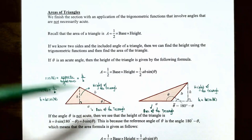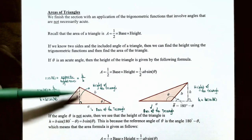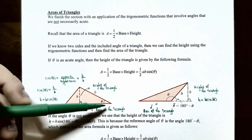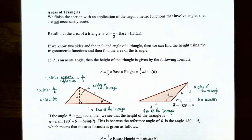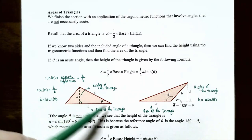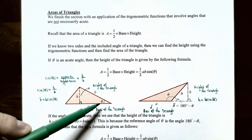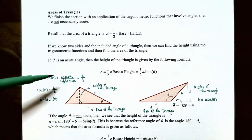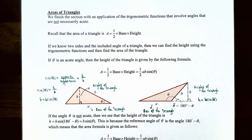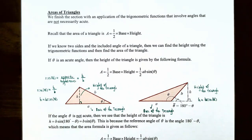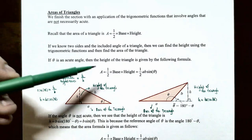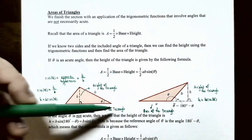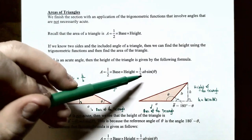If theta is an acute angle — less than 90 degrees or pi over 2 radians — the height of the triangle, called the altitude, is the opposite side from the angle theta in the right triangle. If a is the base of the entire triangle and b is the hypotenuse of the side opposite the right angle, then using the sine function: sine of theta equals opposite over hypotenuse, which is h divided by b. Multiplying both sides by b gives h equals b times sine of theta. So the height is b times sine of theta, and the area formula becomes one-half times a times b times sine of theta.